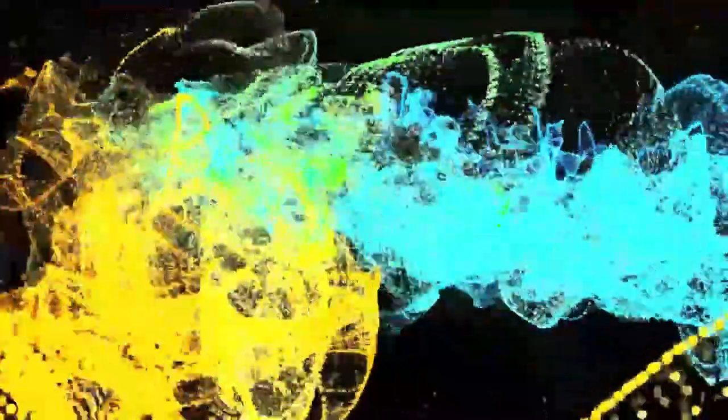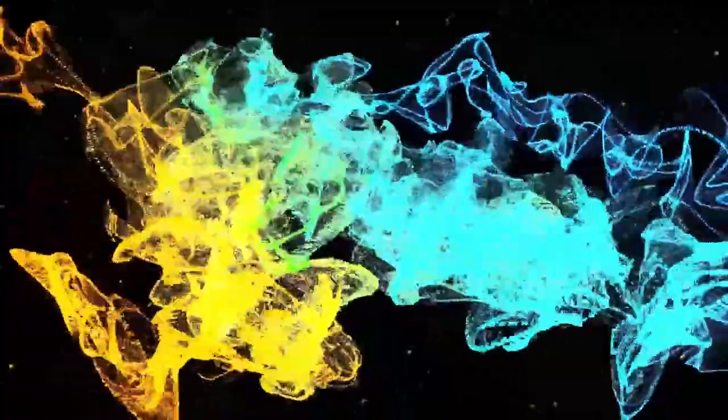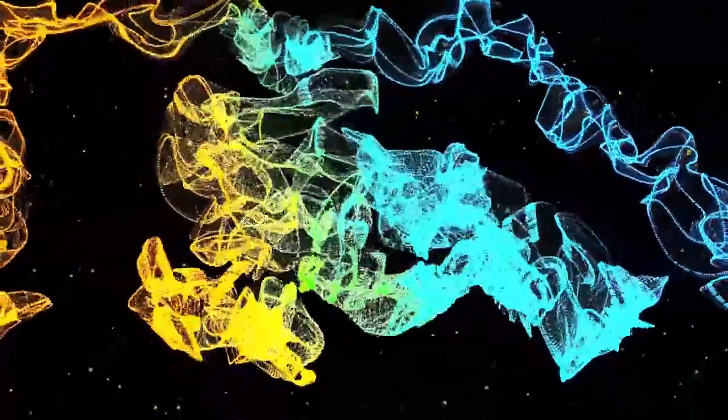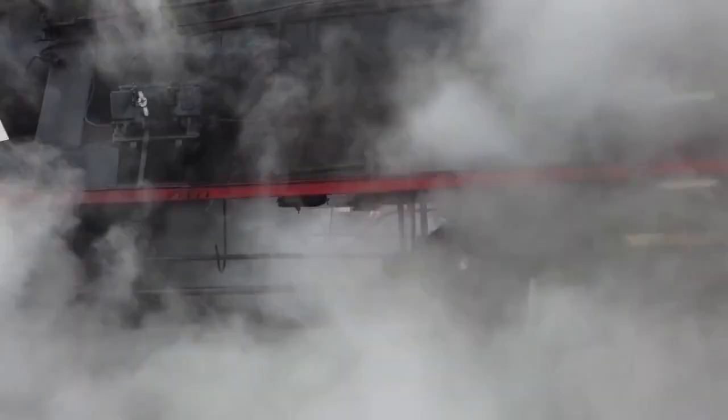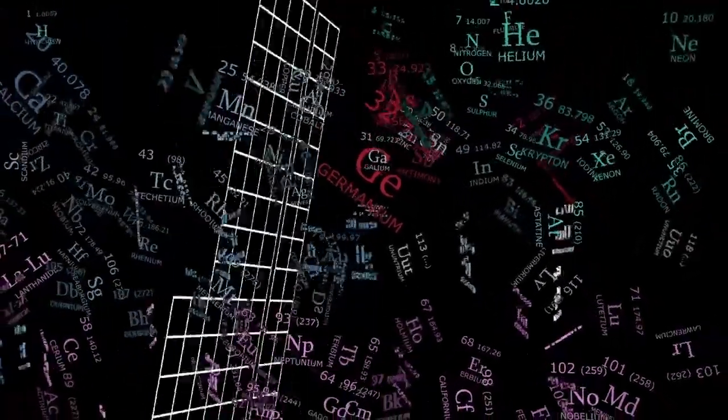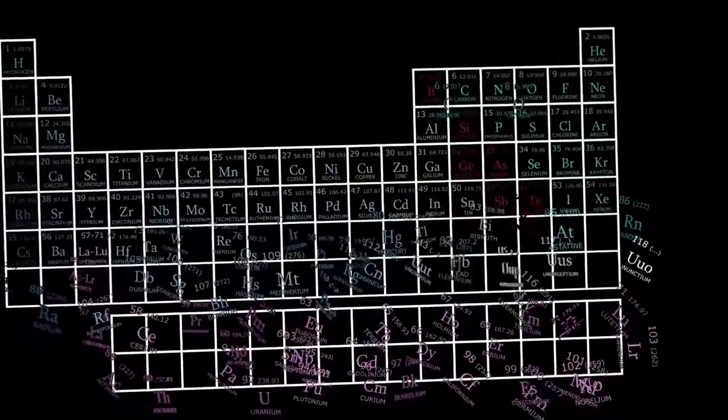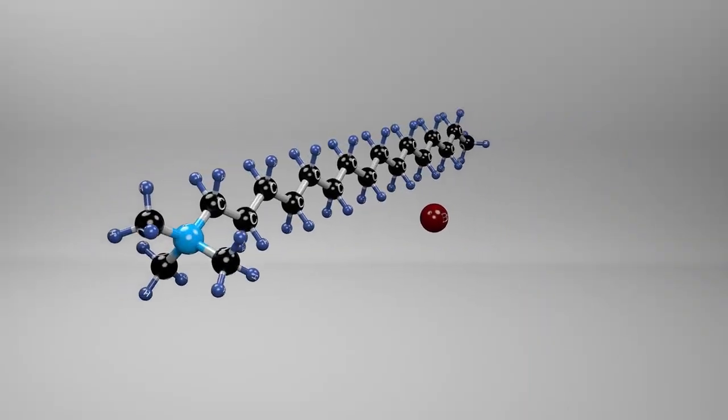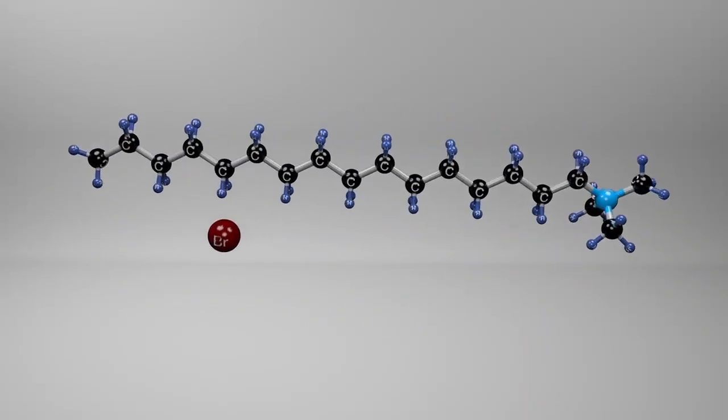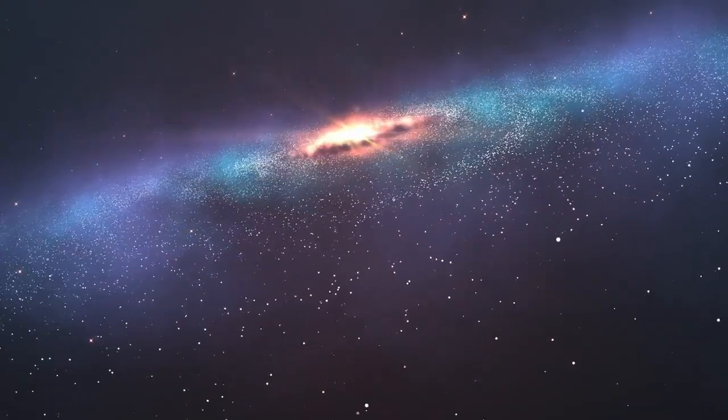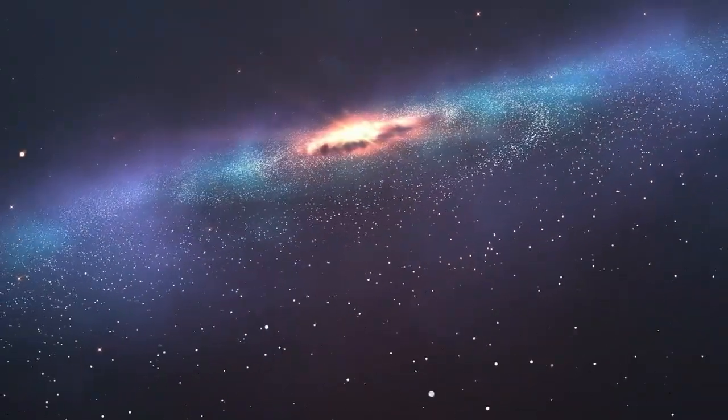To grasp why this is so baffling, you need to understand how galaxies are supposed to evolve. In the beginning, matter was thin and uneven, slowly pulled together by gravity into clouds that collapsed into stars. Over eons, stars grouped into galaxies. But Webb's images suggested this entire process had already happened far too quickly. That galaxy hadn't just taken shape, it had thrived. The laws of astrophysics didn't allow this. It was like finding a fully grown redwood tree sprouting from freshly planted soil. And it wasn't alone.